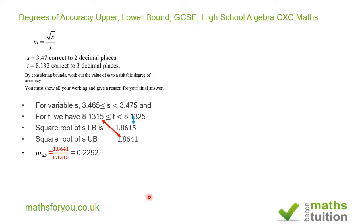Similarly for the lower bound, we take the lower bound of S divided by the upper bound of T. So we end up with 1.8615 divided by 8.1325, and we have 0.2289.